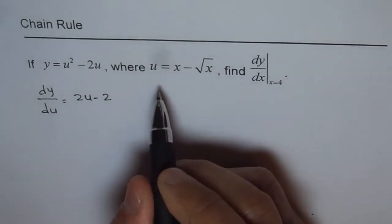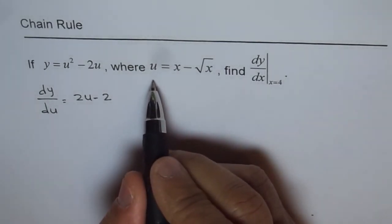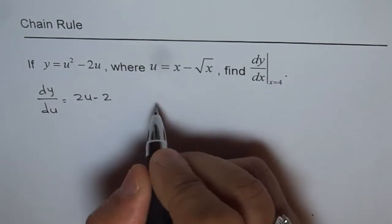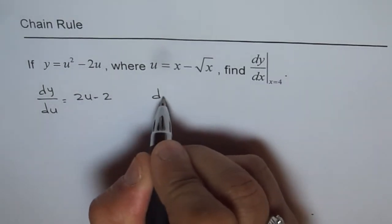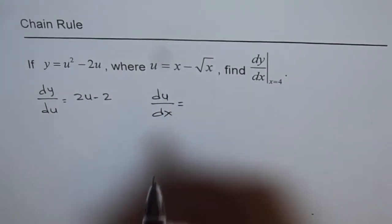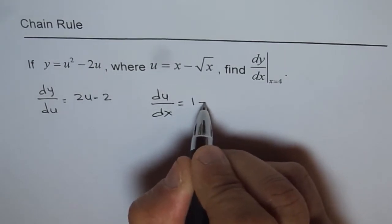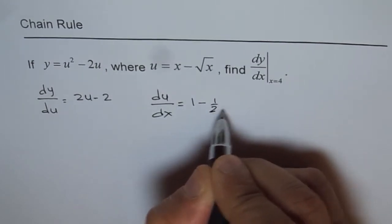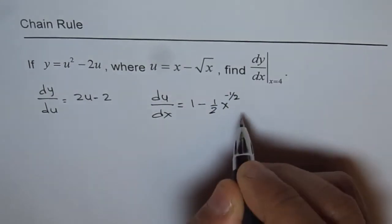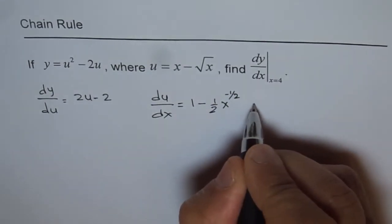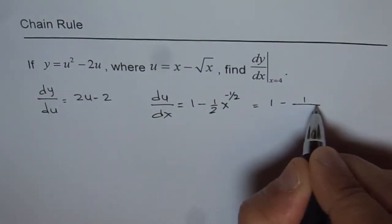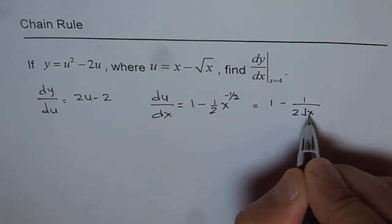Now we apply the power rule to find the derivative of u with respect to x. We get du/dx equals 1 minus one-half of x to the power of negative one-half, which can be written as 1 minus 1 over 2 times the square root of x.